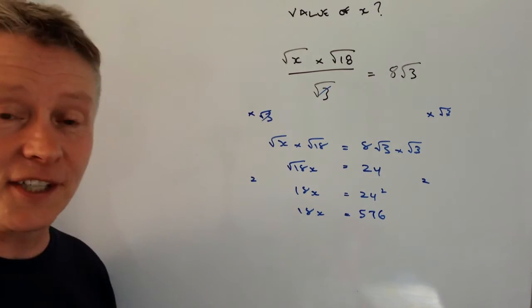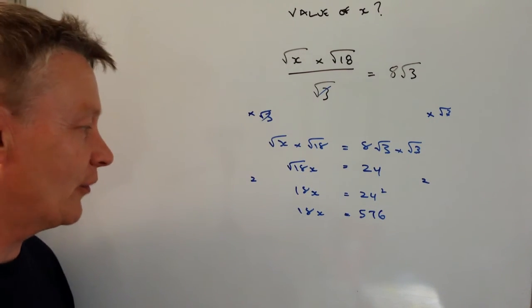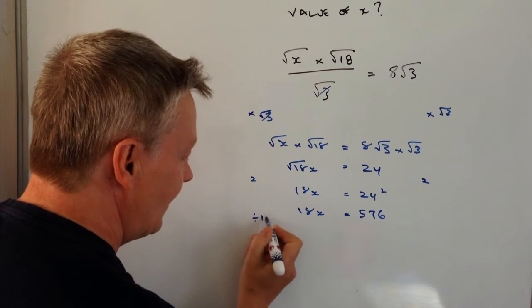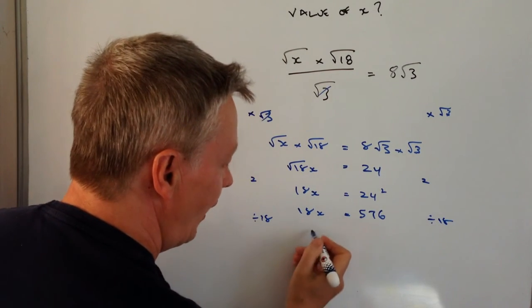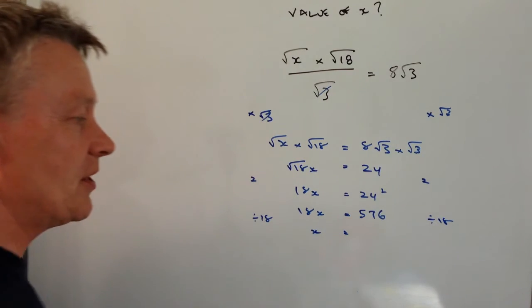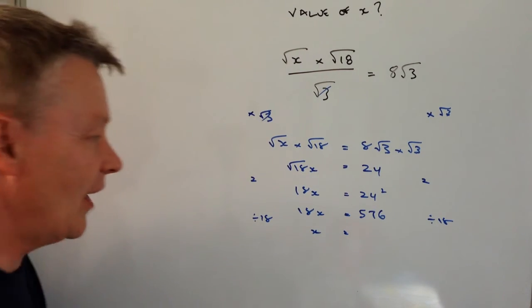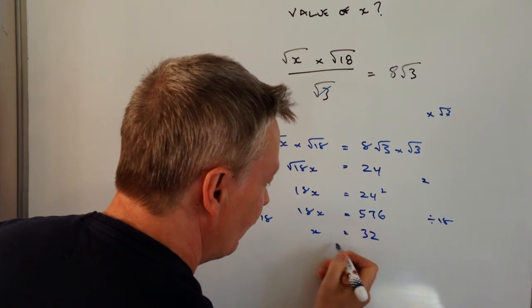OK, so 18x equals 576. If you divide through then by 18, OK, it will give me x equals 576 divided by 18. That's going to give me a value of 32.